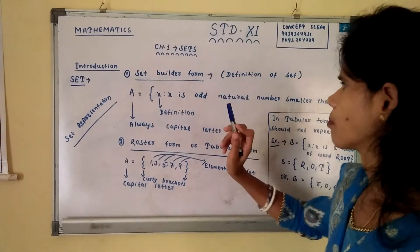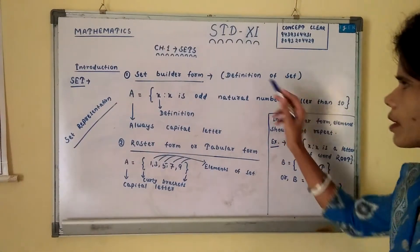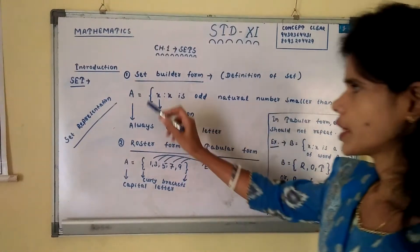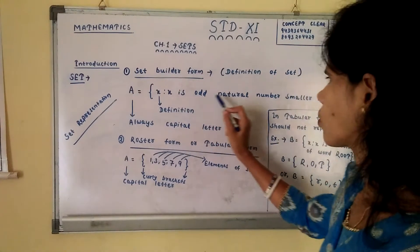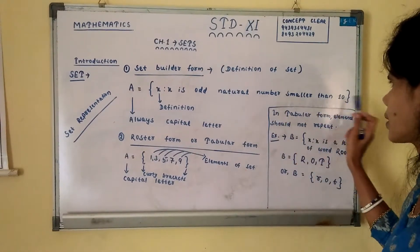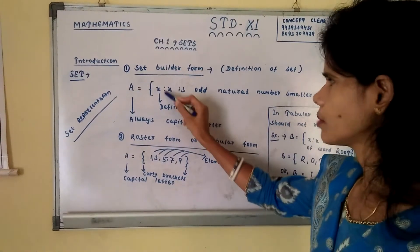In set builder form, we have to define a set or definition of a set. For example, A is equal to x such that x is all natural number smaller than 10. x means definition.